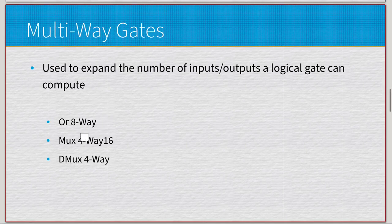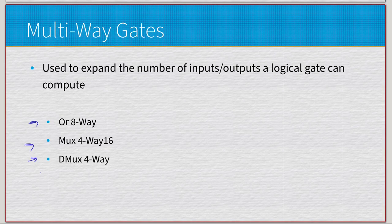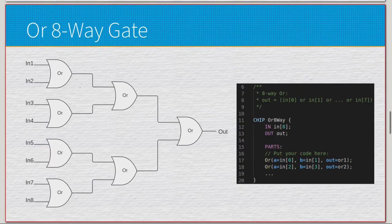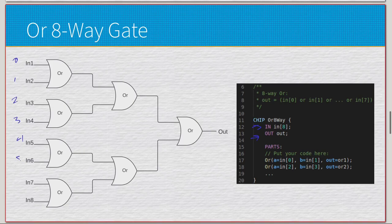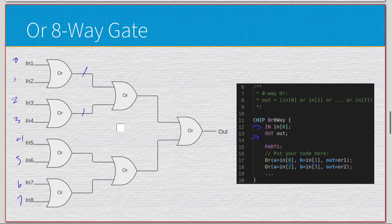Moving on to multi-way gates. We have three different styles: an OR 8-way, a MUX 4-way 16 along with MUX 8-way 16, and a DMUX 4-way along with DMUX 8-way — technically five gates but three styles. For the OR 8-way, we take eight bits as input and reduce them to a singular output. We take bits zero and one, OR them together, then bits two and three, four and five, six and seven, then OR those intermediate outputs together, and finally OR the last pair.